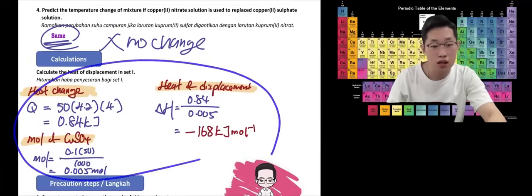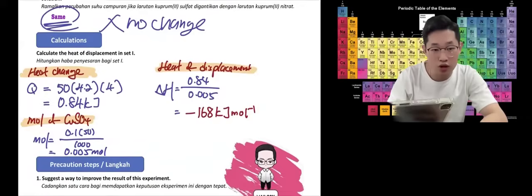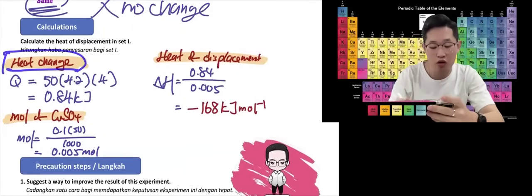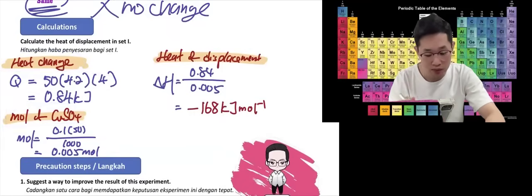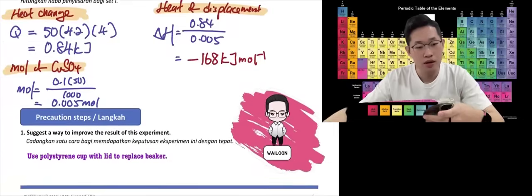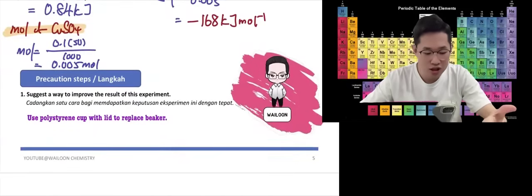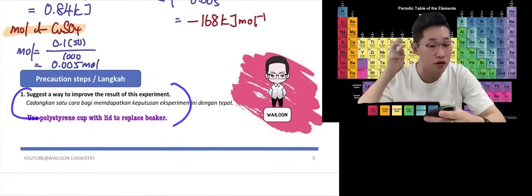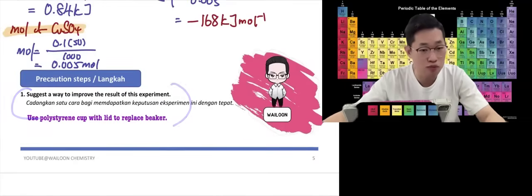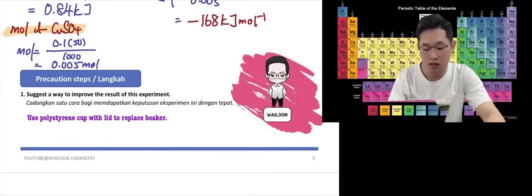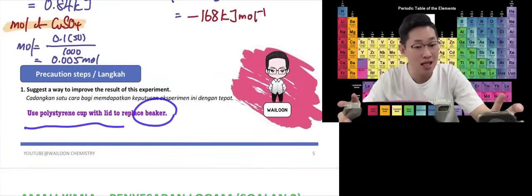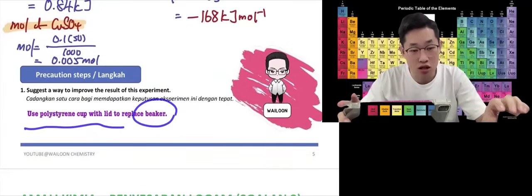Finally, there is a calculation section. Make sure at each step you state what you are calculating — write 'heat change' before doing the working, then state which substance you are calculating moles for, then calculate the heat of displacement. They may also ask how to improve the experiment. If you are given beakers, you can say: use a polystyrene cup with a lid to replace the beaker, because it is a good heat insulator that can reduce heat loss to the surroundings.